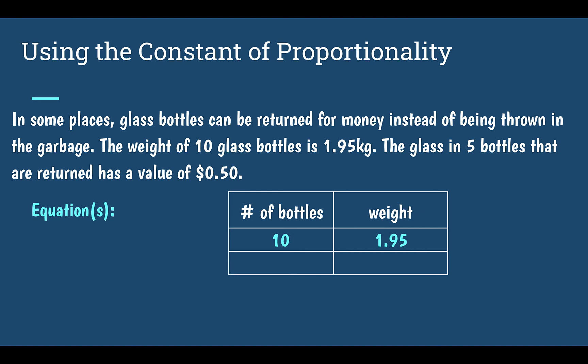If I want to know what equation I can use for any number of bottles, first I'm going to figure out my constant of proportionality. Divide our output by our input: 1.95 divided by 10, which comes out to be 0.195, or 195 thousandths.